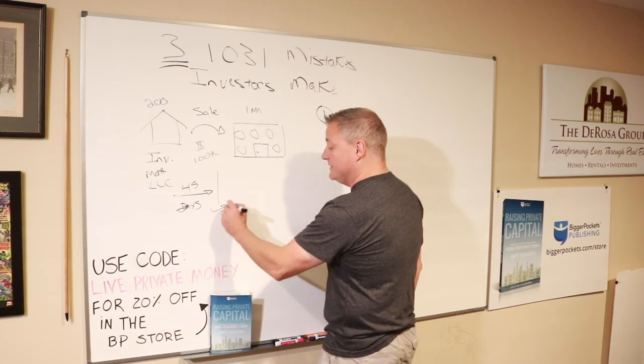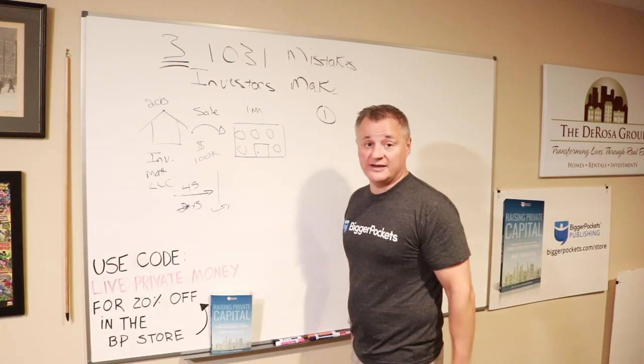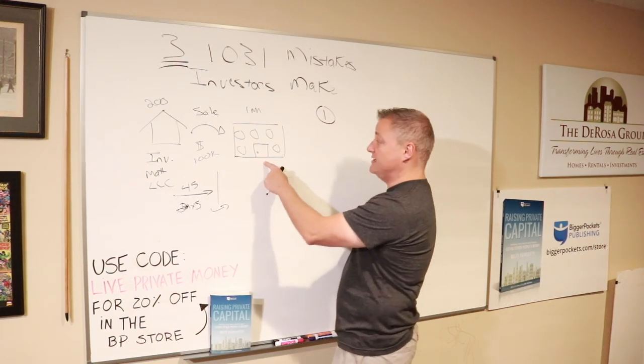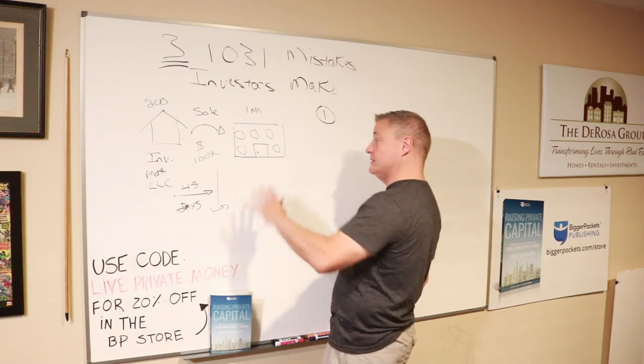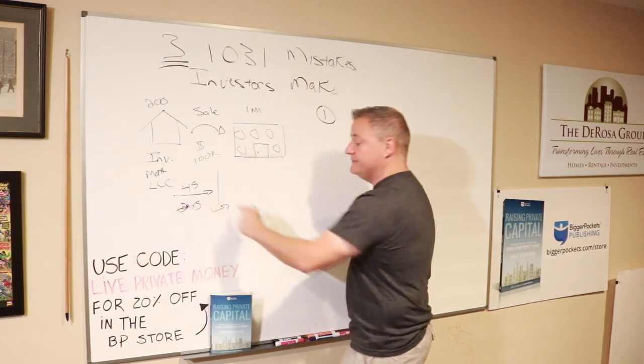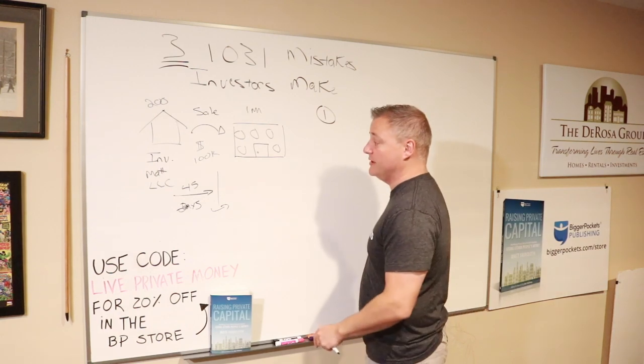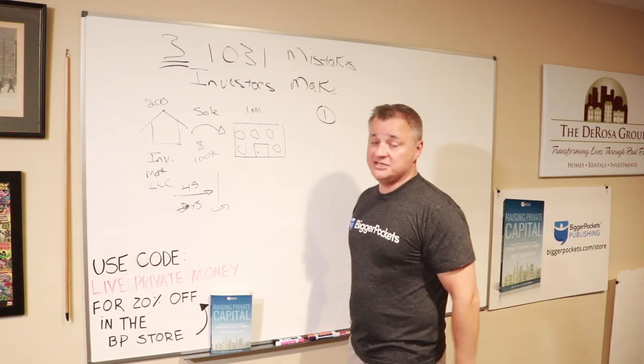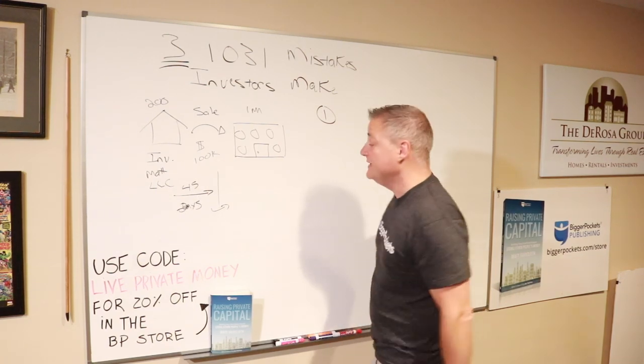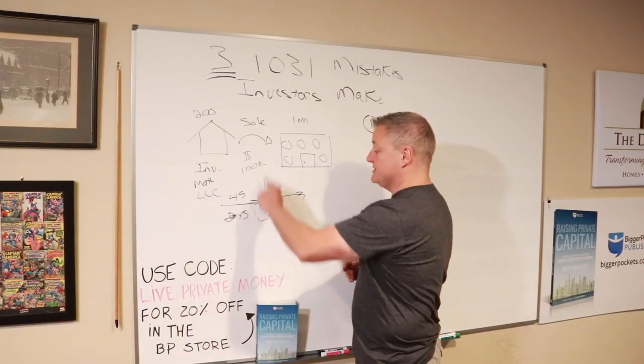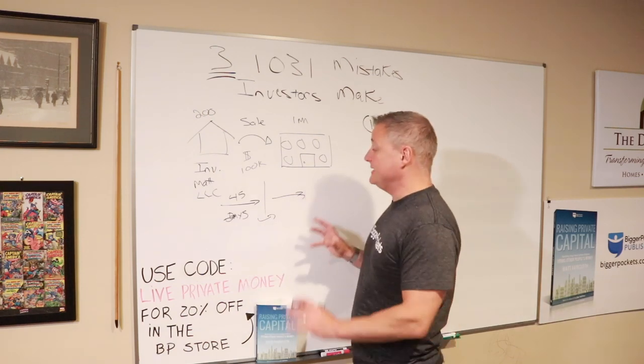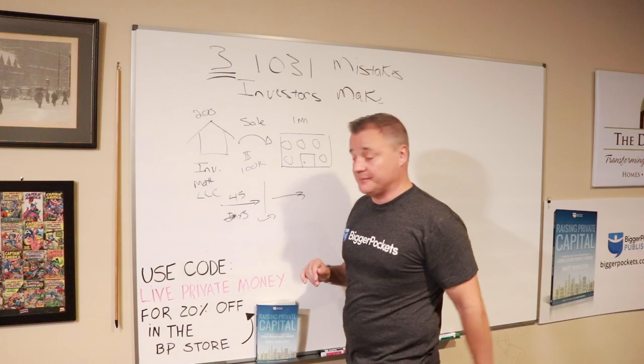I have to identify it to the IRS and to the 1031 exchange custodian and document that I'm saying this could be the property I want to close on. I can identify multiple properties and only close on one of them. If I don't identify in 45 days the properties that I want to trade into, then I'm in violation and I lose the tax savings.